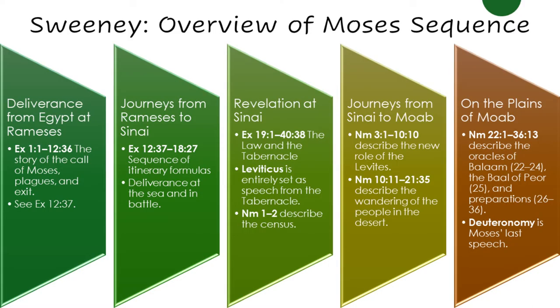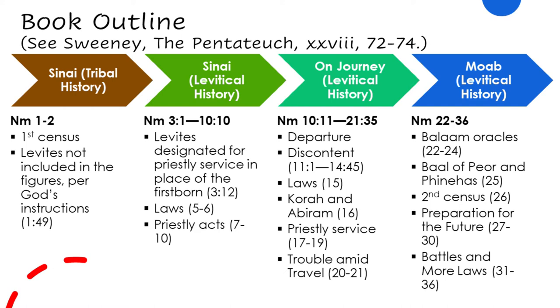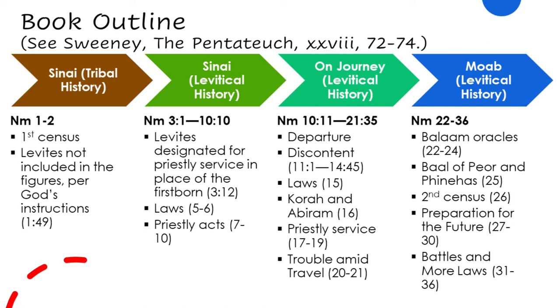Let's take a step back and look at how the Book of Numbers fits into the broader synchronic survey of the Pentateuch. You'll remember Sweeney's analysis of everything that happens from Exodus through Deuteronomy. Here we're now in the second trapezoid from the right. The Book of Numbers largely describes journeys from Sinai to Moab. Israel has left Egypt, wandered a little, spent time at Sinai, and now they're going to wander in the wilderness until they arrive at Moab, which faces the Promised Land. The first two chapters deal with the first census and the history of the tribes. Most of the rest focuses on the Levites, their designation for priestly service, and what happens on the journey — incidentally, a lot of bad things.